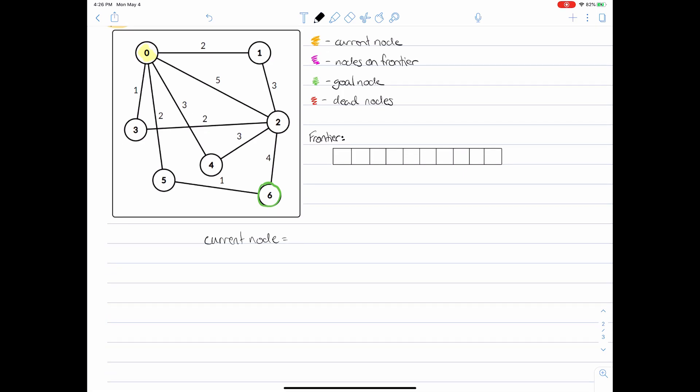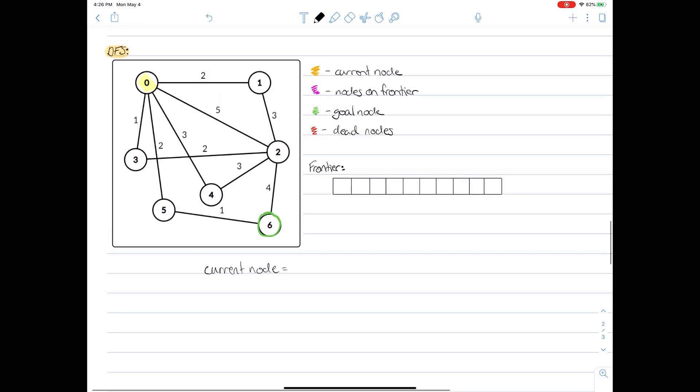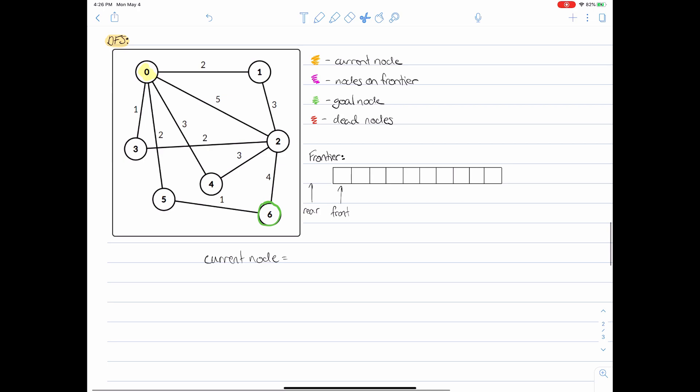When we're implementing a queue using an array we need a front index and a rear index just like we did before. When we enqueue we slide the rear index forward one and we take the value that we wish to put into our frontier and we insert it. So now the frontier looks like this.